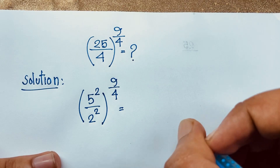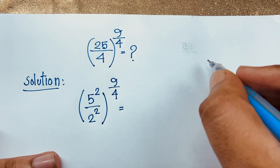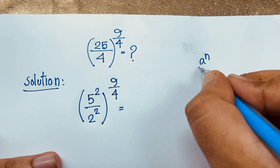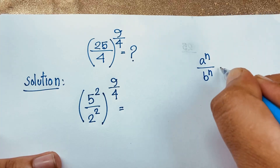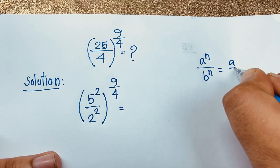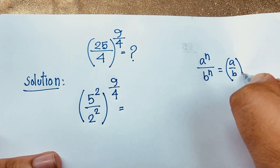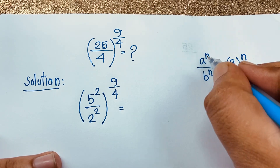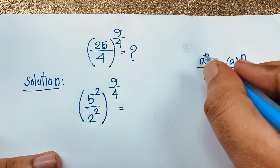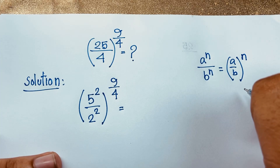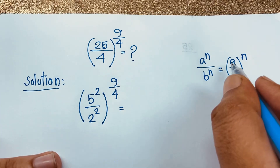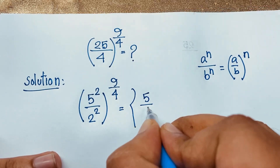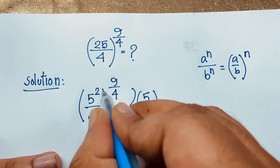Now we use the exponential law: a to the power n over b to the power n equals (a over b) whole to the power n — where the bases are different but the exponent is the same. Applying this formula, the expression becomes (5 over 2) whole to the power 2, with the outer power of 9 over 4.